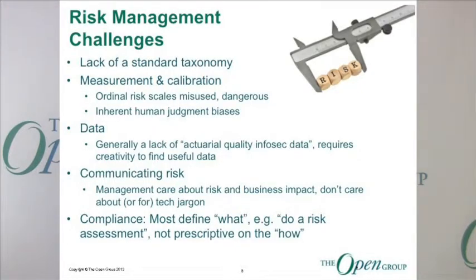A second area of challenge is measurement and calibration. Ordinal scales — high, medium, low, or one through five — can really mislead people in terms of understanding how much risk is actually present. You can't take ordinal scales and compute with them; you can't multiply risks using high, medium, and low — you can come out with meaningless data. Those can be kind of dangerous to use.